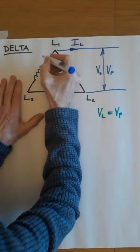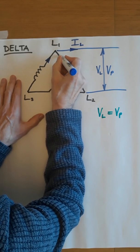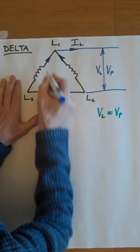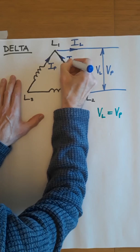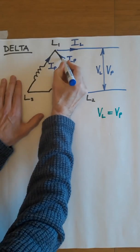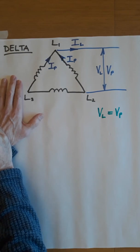But the line current is made up at any instant in time of the two currents that are coming out of these two phases. And these currents could be going either way. They could be going in or out, depending on what's happening in the sinusoidal cycle.